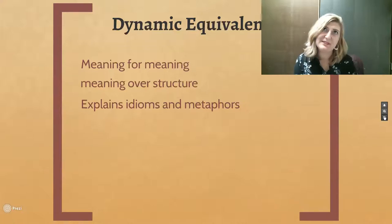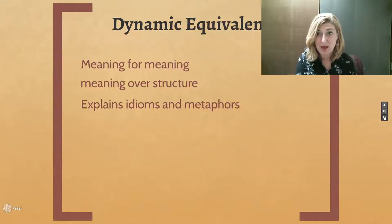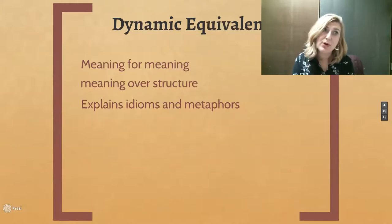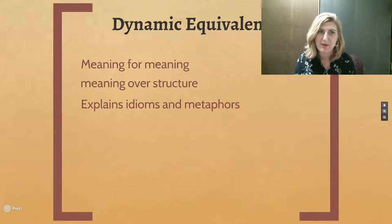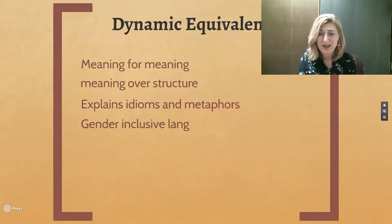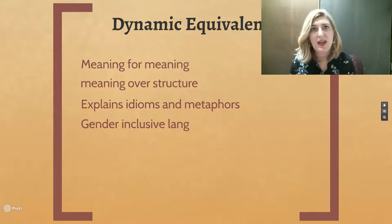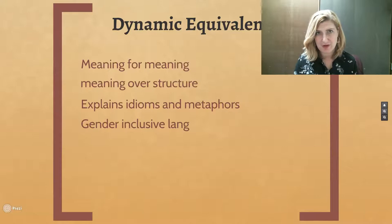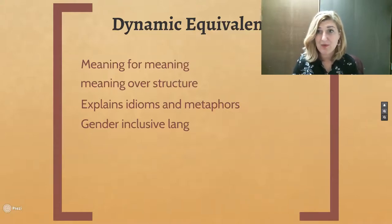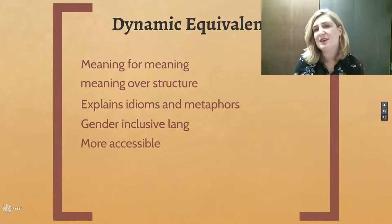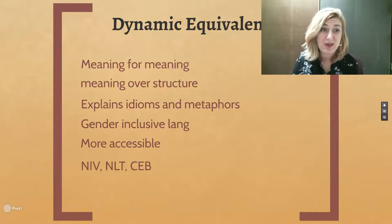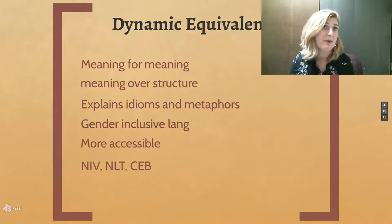You're going to explain idioms and metaphors. For example, when Isaac puts his hand under his dad's thigh, you might explain that out and say, 'okay, they're doing a ceremony — he ceremonially put his hand under his dad's thigh.' You're going to give a little bit more juice and it's going to be easier to read. Also, the Bible being an ancient text would say 'all men' instead of 'all people.' A dynamic equivalent is going to use gender-inclusive language whenever possible. That's like the NIV, New Living Translation, or Common English Bible — those are all dynamic equivalents.